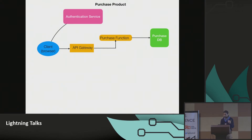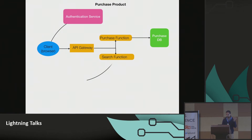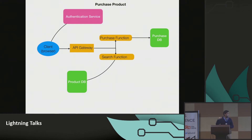Once you purchase that information — that pet — you may want to search for it. If you want to search, you will have a search function, which goes to some other database. If you're searching, it could be Solr, Elasticsearch, or whatever search or NoSQL database you use. That's all about function as a service. In the back end, the purchase function and search function are all small functions that give you information.